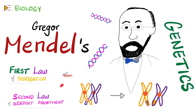Hey guys, it's Medicosis Perfectionitis, where medicine makes perfect sense. Let's continue our genetics section in the biology playlist. Today, we'll talk about Gregor Mendel's law of genetics — the first law of segregation and the second law of independent assortment.